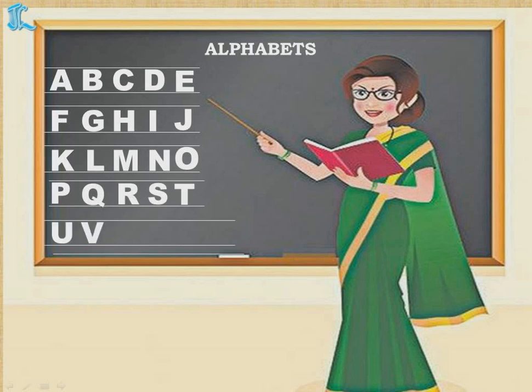U, V, W, X, Y and Z. And in this we learned there are five vowels.